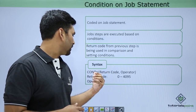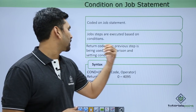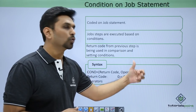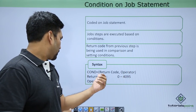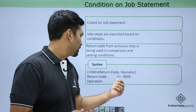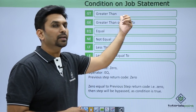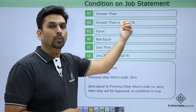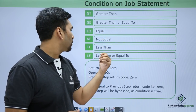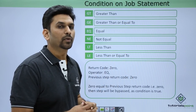In the syntax you can see: condition, then return code, then operator, and then it checks the return code from the previous step. Return code can be from 0 to 4095, where 0 means success. The operators available are: greater than, greater than or equal to, equal to, not equal to, less than, or less than or equal to. We can choose any one based on our requirement.